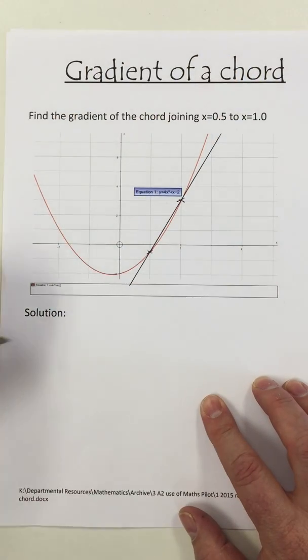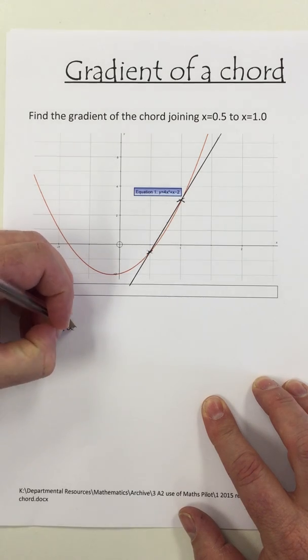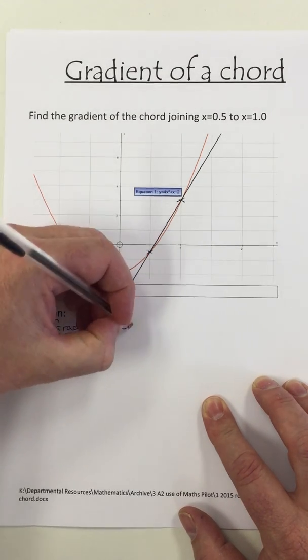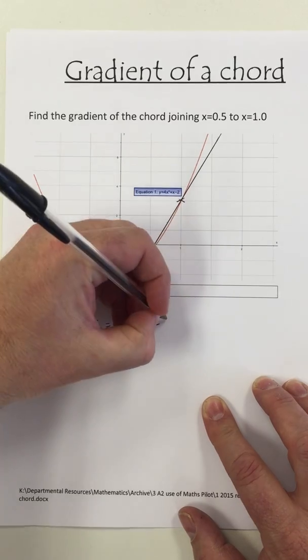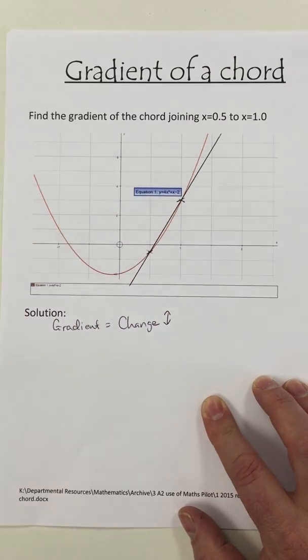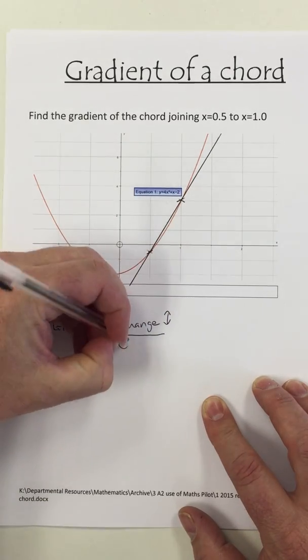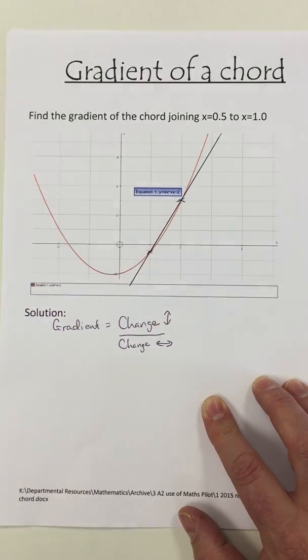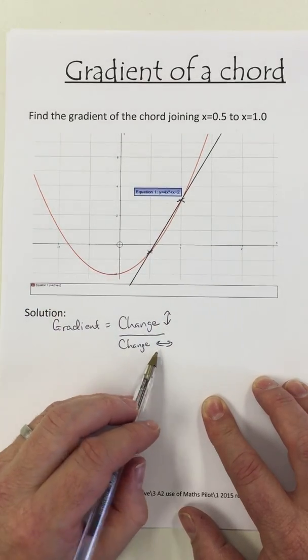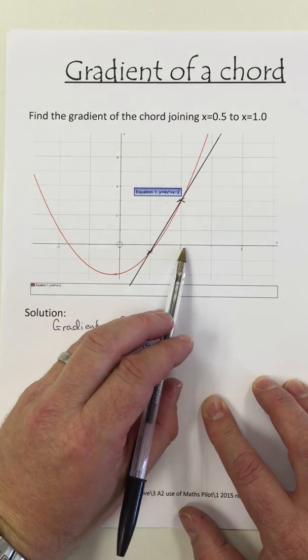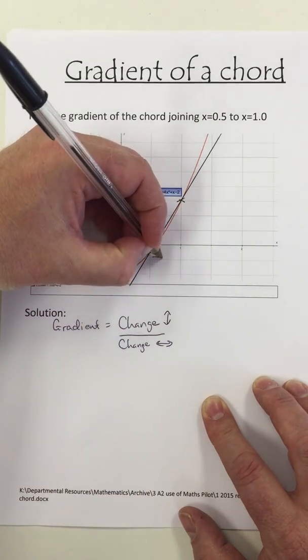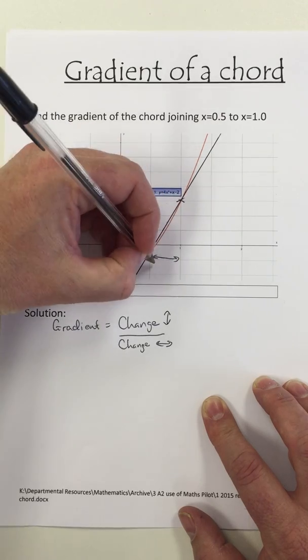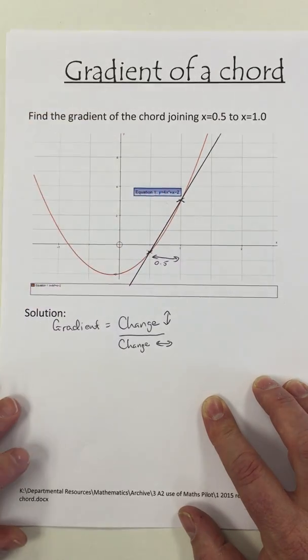So you know from GCSE that the gradient is the change going up divided by the change going across. I've got the going across numbers because that's just a half and 1, so I know that the change going across is just a half.